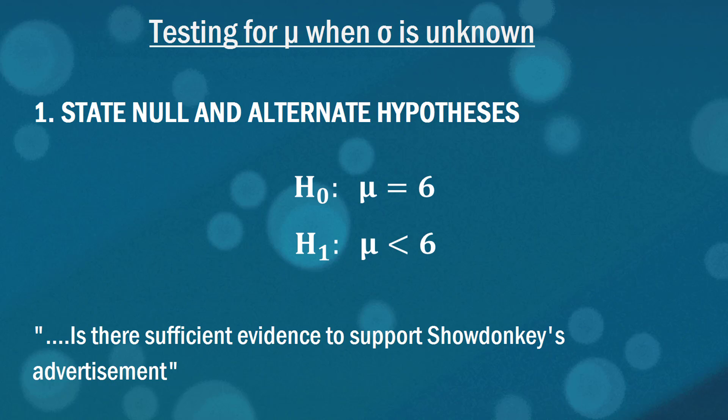The reason being is in a hypothesis test we have two potential results: to either reject the null hypothesis or to not reject the null hypothesis. If we're seeking evidence for something, we would hope that we can reject something in favor of it rather than just simply not rejecting it. So for that reason we put whatever we're seeking evidence for in our alternate hypothesis.